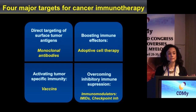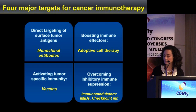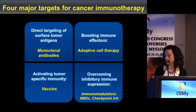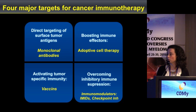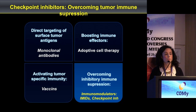So it is clear that the immune system is important in treating cancer patients. There are four strategies by which we can improve the immune system's response against tumors, and today we are going to focus on checkpoint inhibitors — drugs that overcome the immunosuppression built by the tumor.